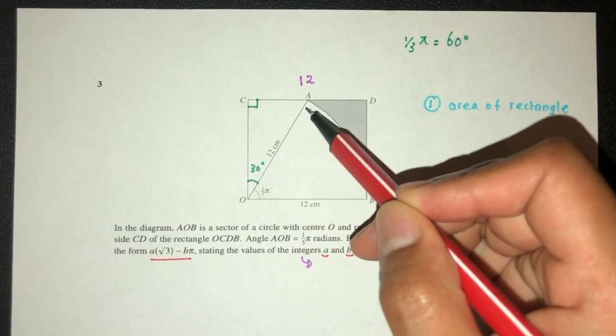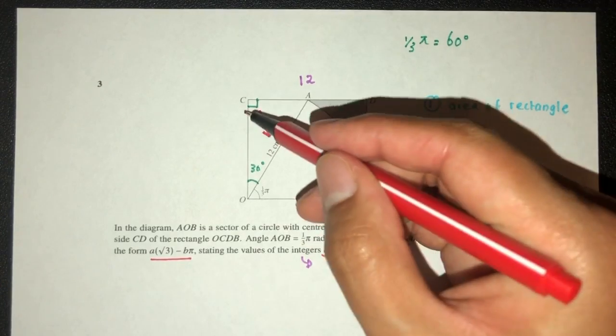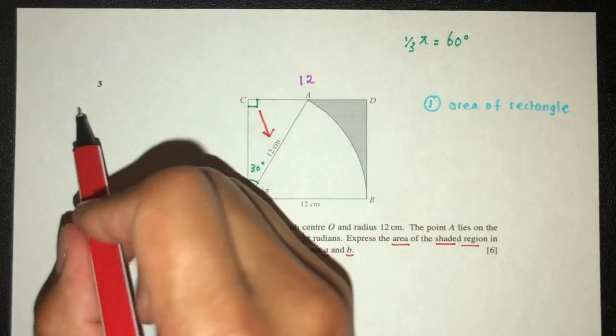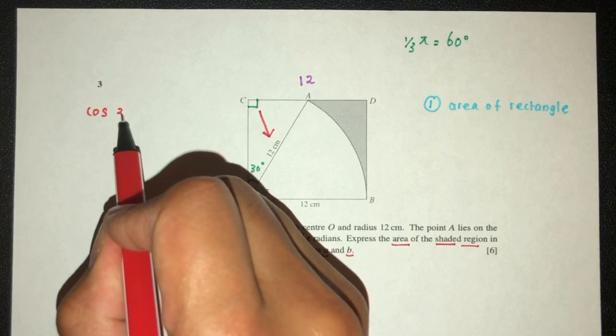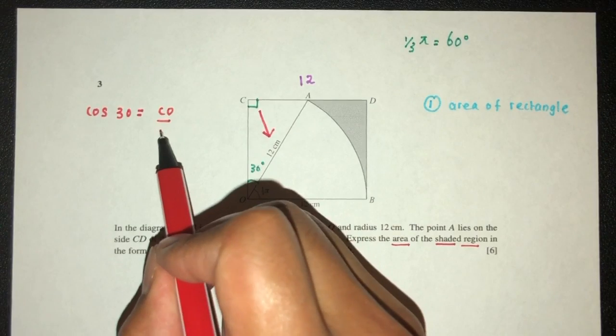We know this side. This is my H side. It is right opposite the right angle, my H side. I'm trying to find this side, my A side. So we have to use cos. So cos of the angle have to be my A side, which is CO, over the value of 12.